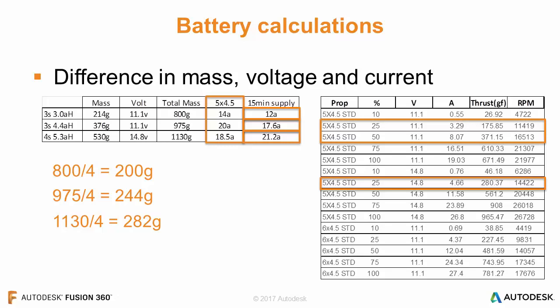Overall when designing something like this — whether a quadcopter or anything else — you want to look at this type of data, compare your options, and figure out the best route. I've actually built this setup on a 3Ah 3-cell battery, and from my experience I was able to fly for about 8 to 10 minutes — some maneuvers but mostly hovering. So these calculations for 15 minutes at 12 amps requiring about 14 amps are pretty realistic. This tells me a 4-cell system with larger capacity batteries would give us about 20 minutes of flight.